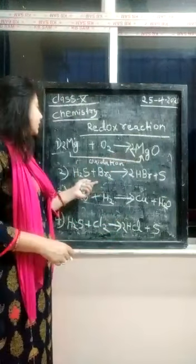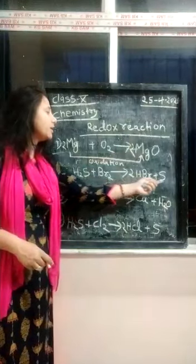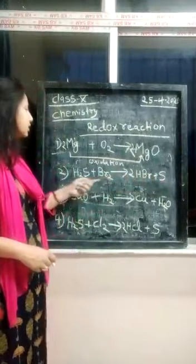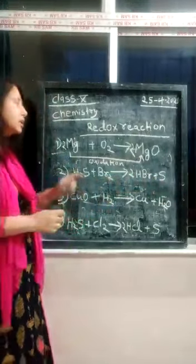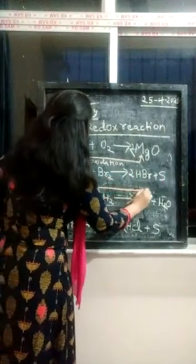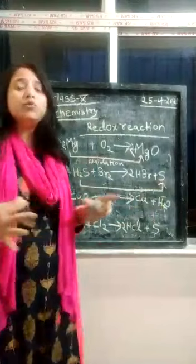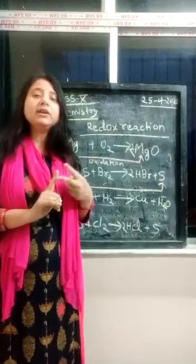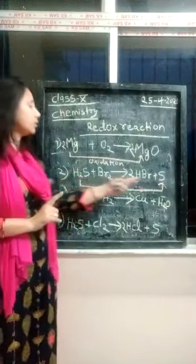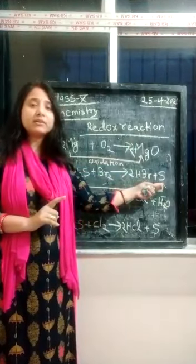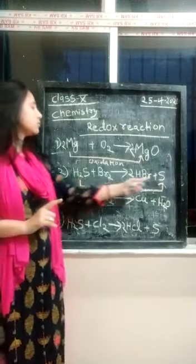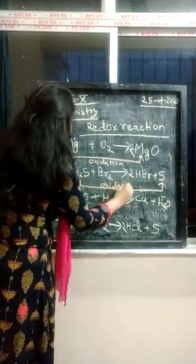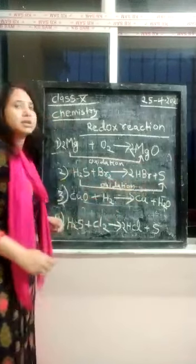In reaction 2, hydrogen sulfide is reacting with bromine, and hydrogen bromide is formed while sulfur is liberated. Here, hydrogen is being removed from hydrogen sulfide and sulfur is released. Removal of hydrogen is also an oxidation process. Oxidation means addition of oxygen or removal of hydrogen. So sulfur is being oxidized — this is the oxidation process.